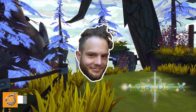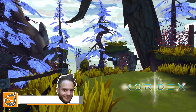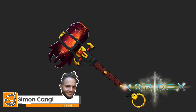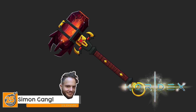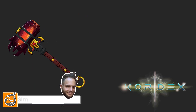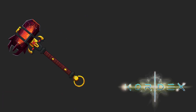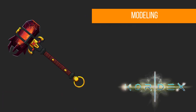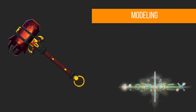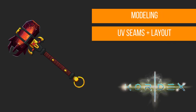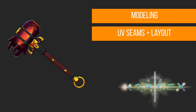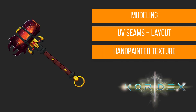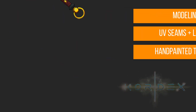My name is Simon Gangl and today I want to create a game asset with you. I am talking about a Fantasy Warhammer weapon, which should be implemented into our game Codex later. In this tutorial series I will explain how to create the 3D object with help of my concept, how to set UV seams and create a UV layout plus UV map, and how to draw a hand-painted texture with Photoshop and Blender's texture painting tool.